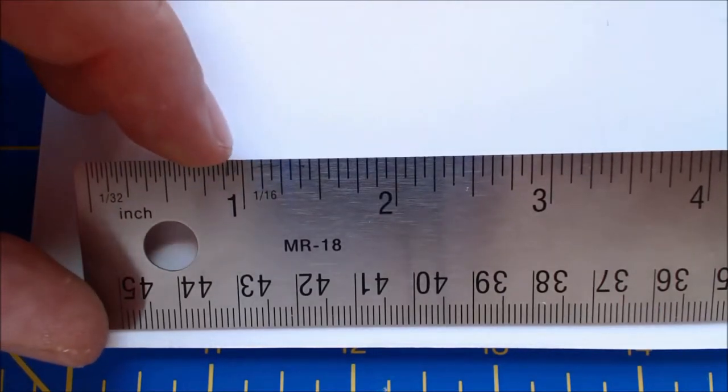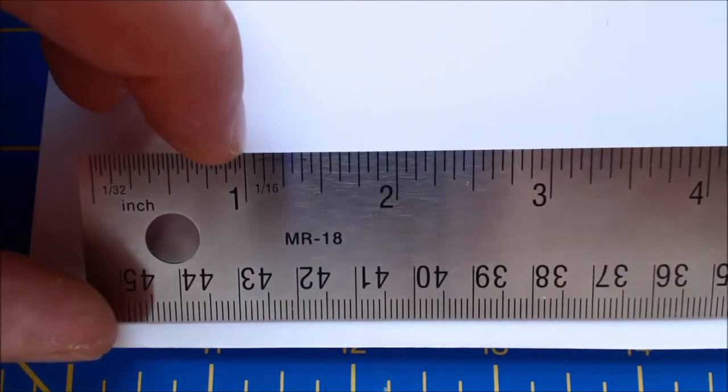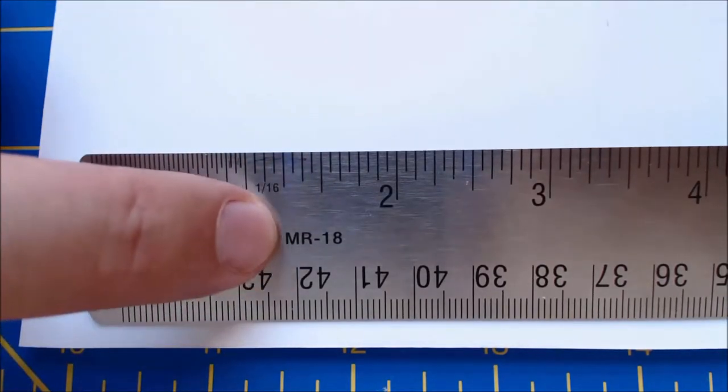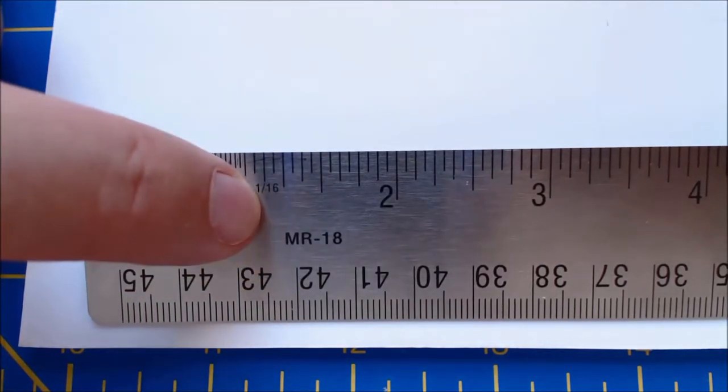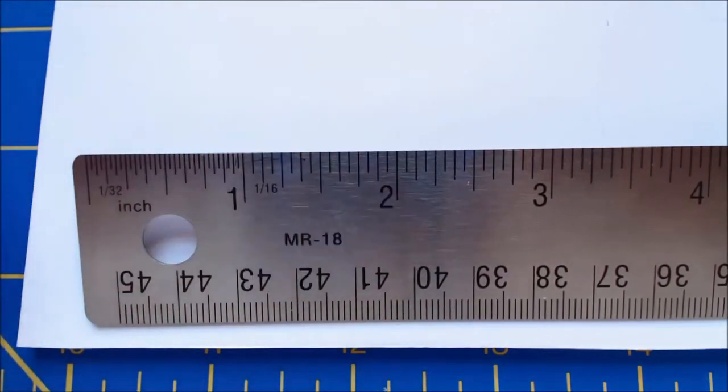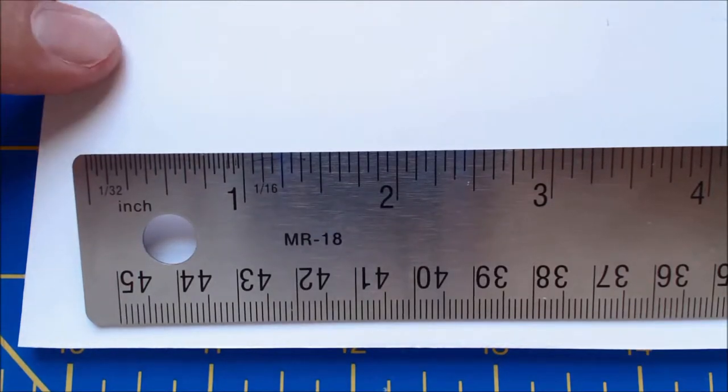The rest of the ruler, except for the last inch between seventeen and eighteen inches, is divided into sixteenths. And you can see that little one sixteenth right there, which means that the smallest marks are one sixteenth of an inch, or there are sixteen in an inch.